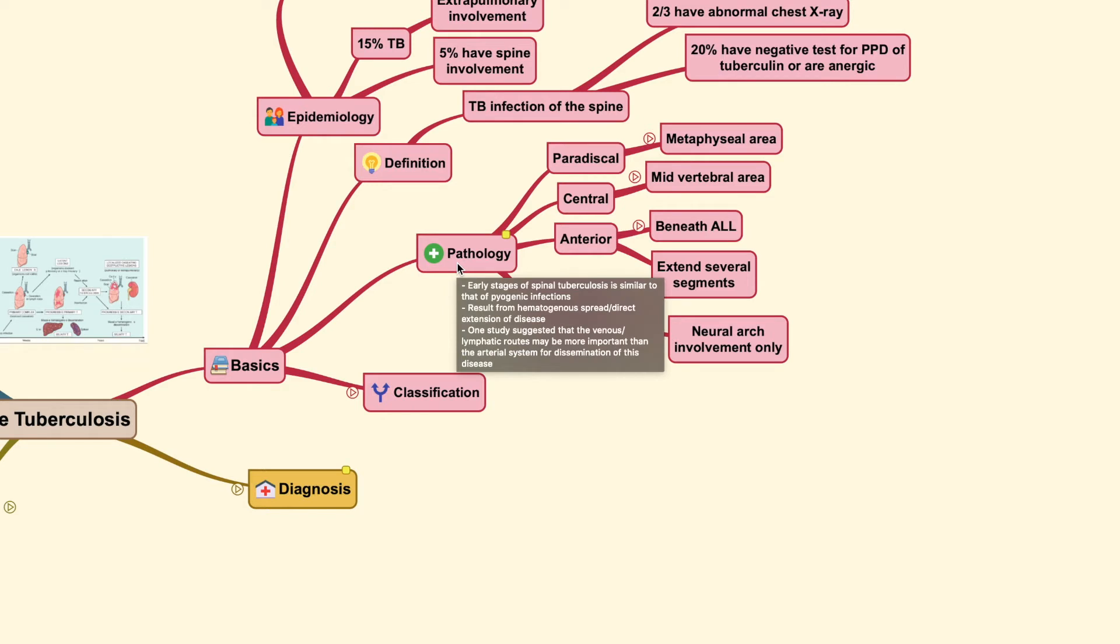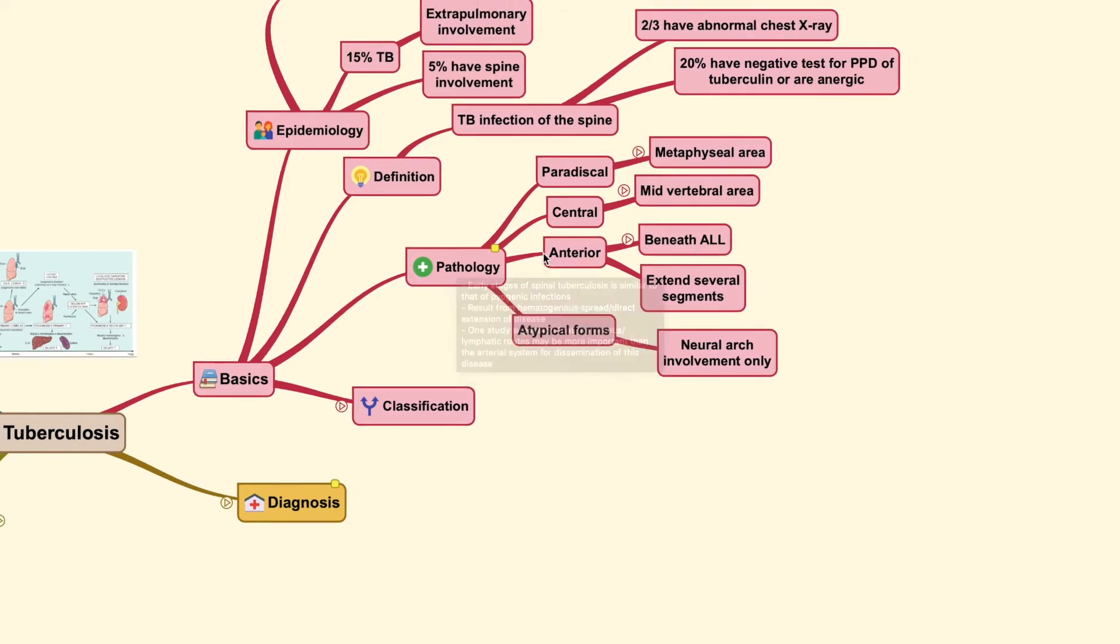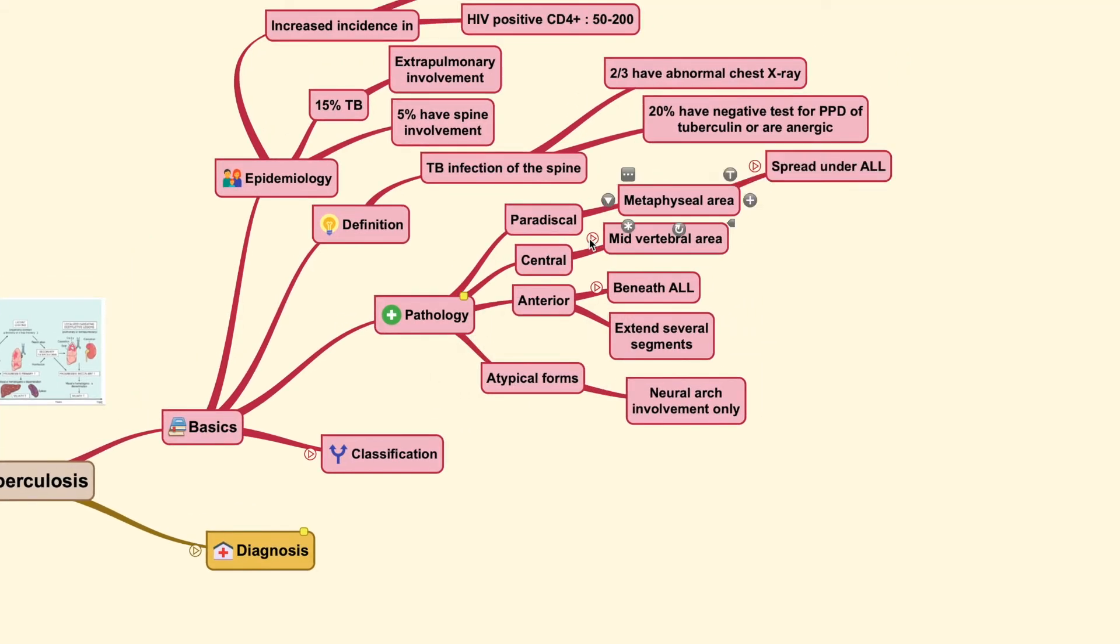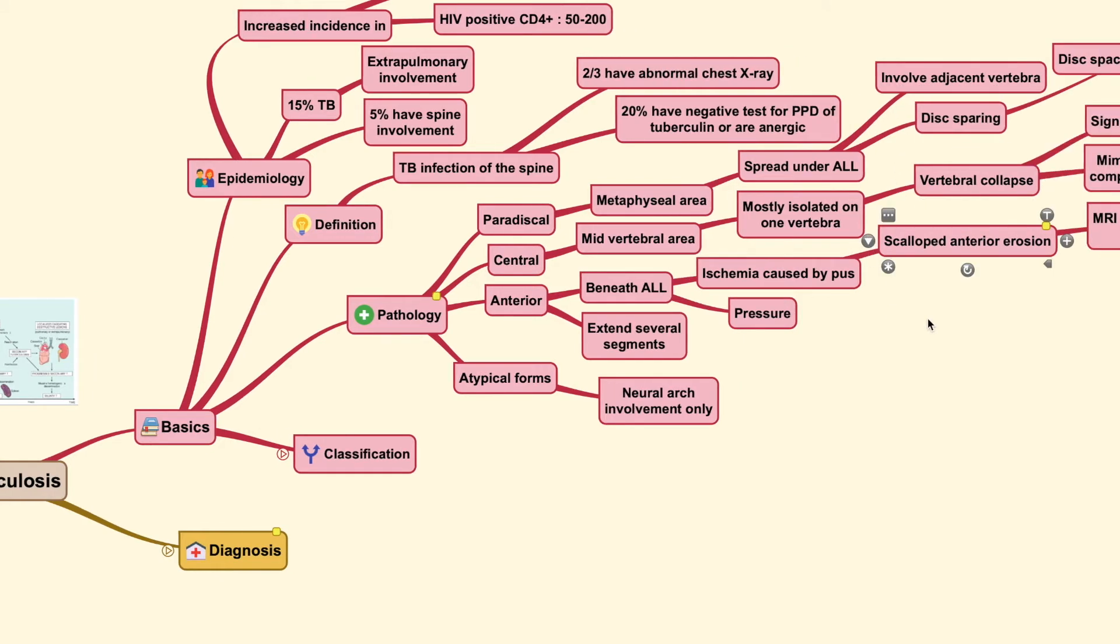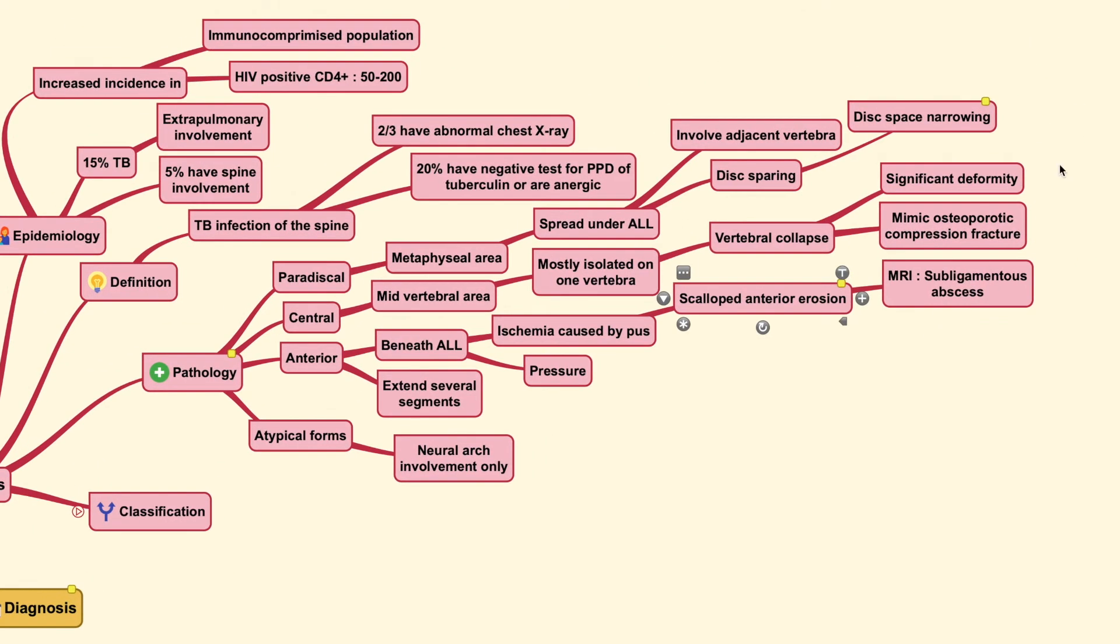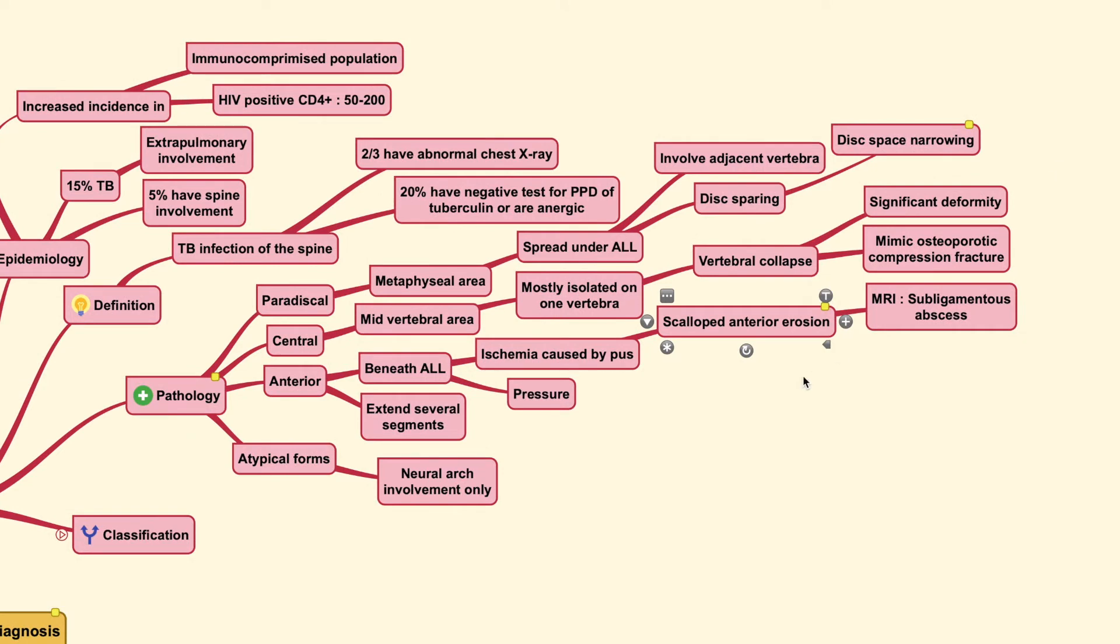Now, another study also suggested that venous or lymphatic routes may also be important compared to the arterial system for the dissemination of this condition. Now, usually this spine tuberculosis, they go to certain areas within our vertebral body and therefore helps us identify this lesion through x-ray findings.